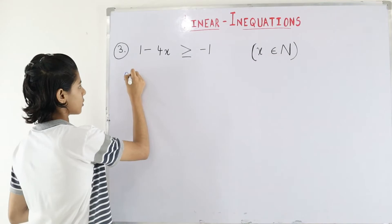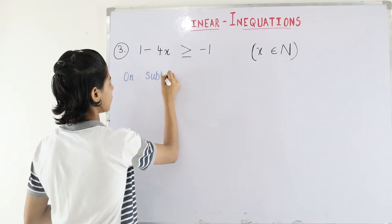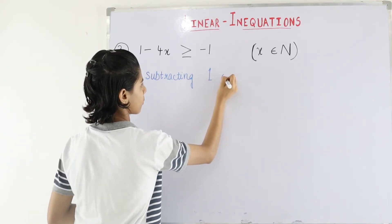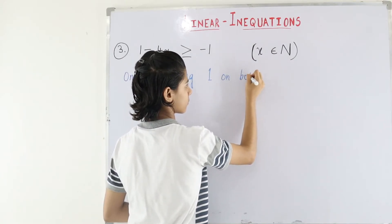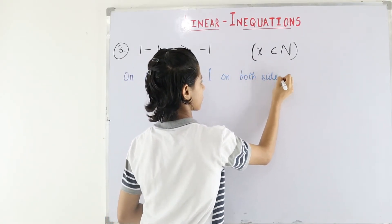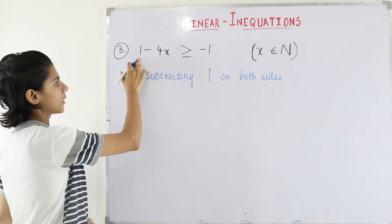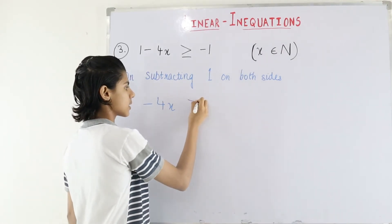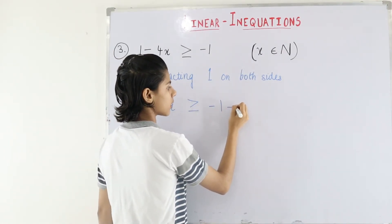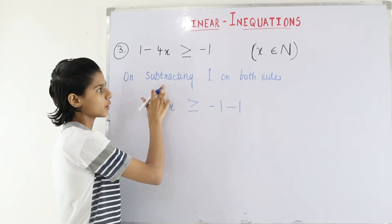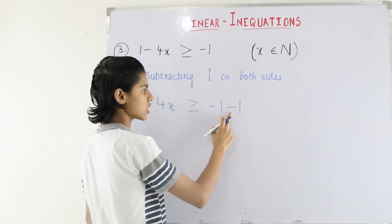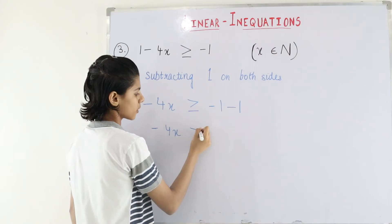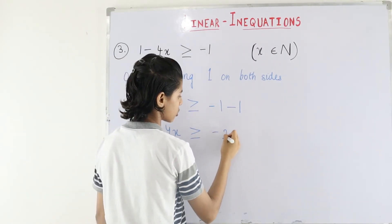On subtracting 1 on both sides — here the minus 1 cancels, leaving minus 4x is greater than or equal to minus 1 minus 1. We subtracted minus 1, so we get minus 1 minus 1. Minus minus gives plus, so 1 plus 1 is 2. The answer is minus 2. So minus 4x is greater than or equal to minus 2.